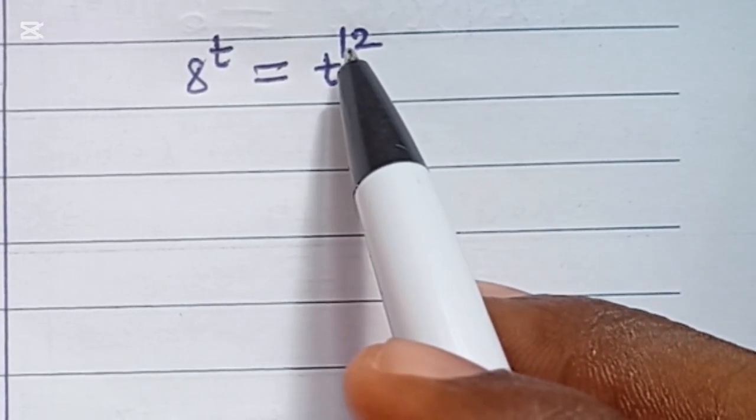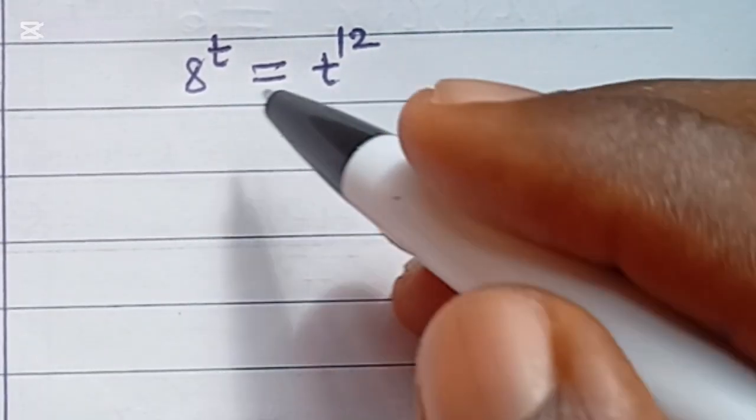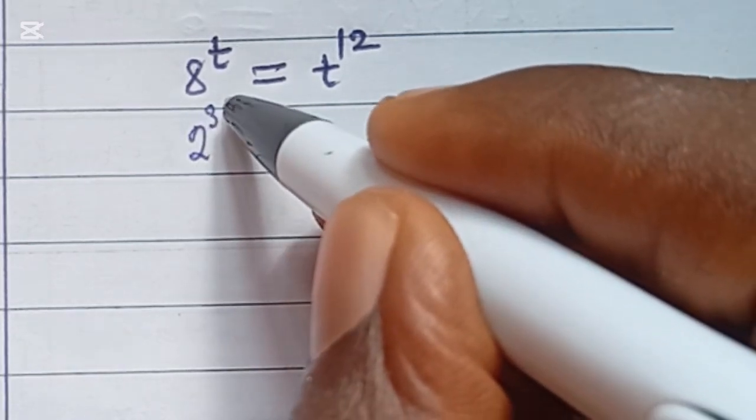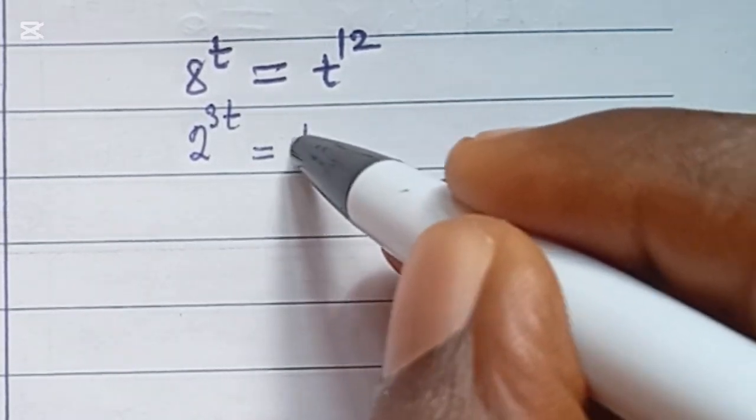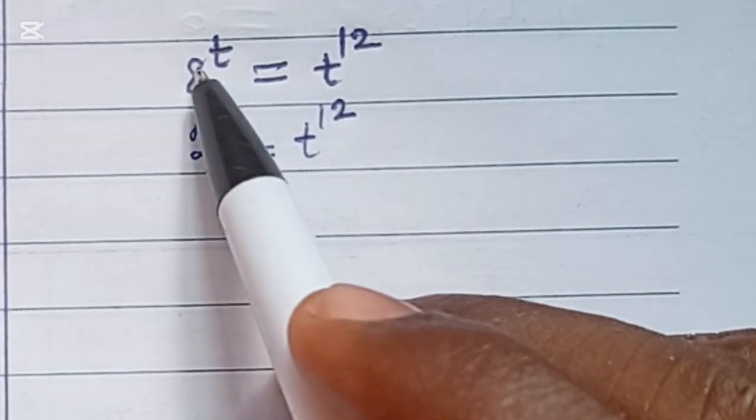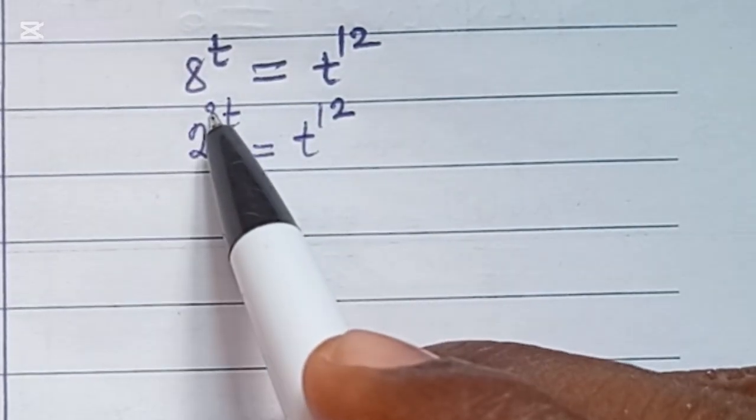One of the ways you can solve this is to express 8 as 2 to the power of 3, times t, which is equal to t to the power of 12. Because 2 to the power of 3 is 8, 2 times 2 times 2 is 8.